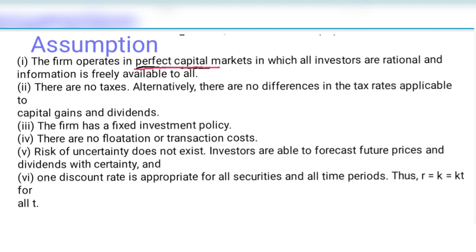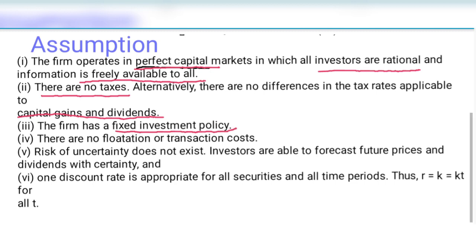Second, investors are rational, means investors do investment in an intelligent way after doing analysis, and all the information regarding the company is freely available to all. Second, there is no taxes, means no taxes, or alternatively there is no difference in the tax rate applicable to capital gains and dividends — if a tax rate is present, then tax on capital gain and tax on dividend must be the same. Third, the firm has a fixed investment policy.